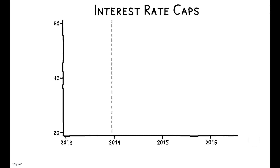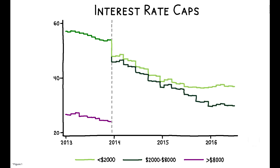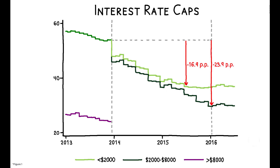Prior to the reform, caps were set separately for loans above and below the $8,000 threshold. After the reform, the category of smaller loans was divided into those above and below $2,000, and a series of reductions were phased in over the following two-year period. By December 2015, the interest rate cap on loans below $2,000 had been brought down by 16.9 percentage points, while the cap on loans between $2,000 and $8,000 had been brought down by 23.9 percentage points. Over the same period, the cap on larger loans remained relatively unaffected.